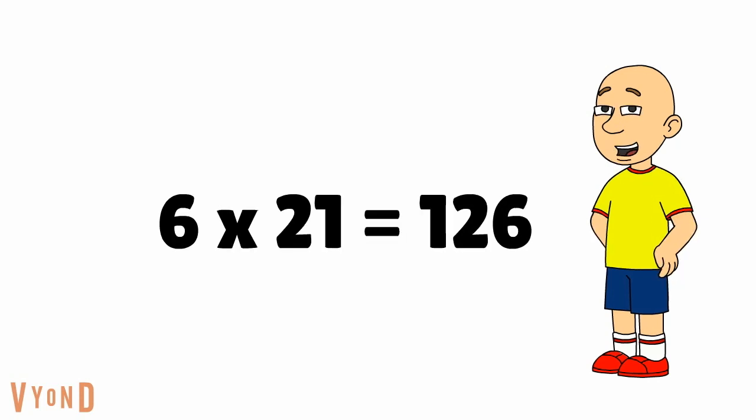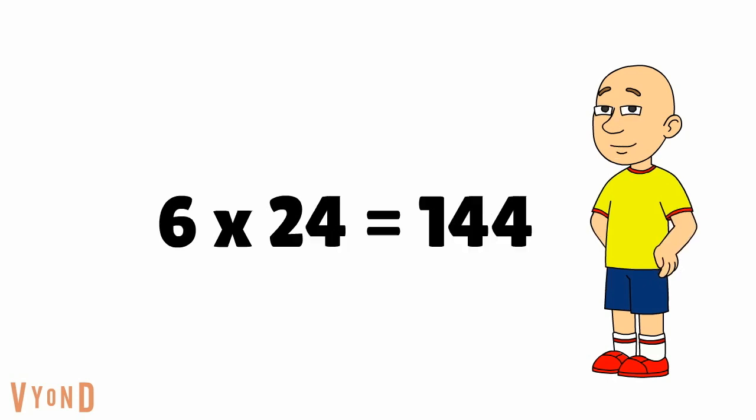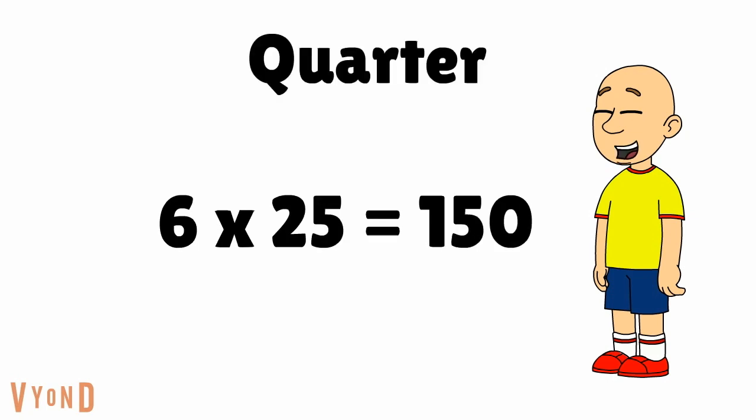6 times 21 equals 126. 6 times 22 equals 132. 6 times 23 equals 138. 6 times 24 equals 144. And 6 times 25 equals 150. Wow guys, we have just reached a quarter to the end. Now let's keep going.